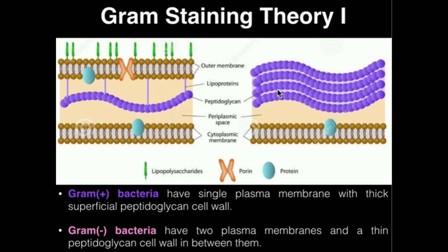Gram-negative bacteria, on the other hand, which are shown here on the left, have two plasma membranes. You can see between the two plasma membranes they have a physical space called the periplasmic space, the fluid inside of which is called periplasm. And inside the periplasm, we have a thin peptidoglycan layer.